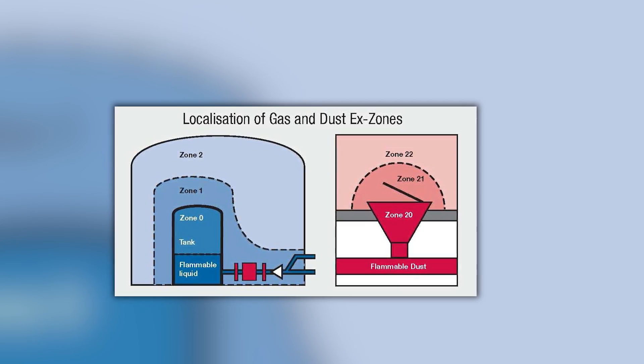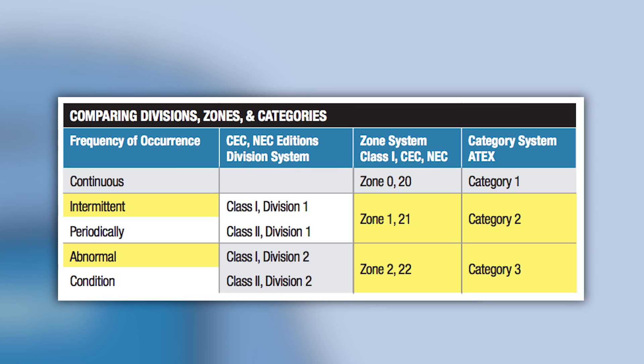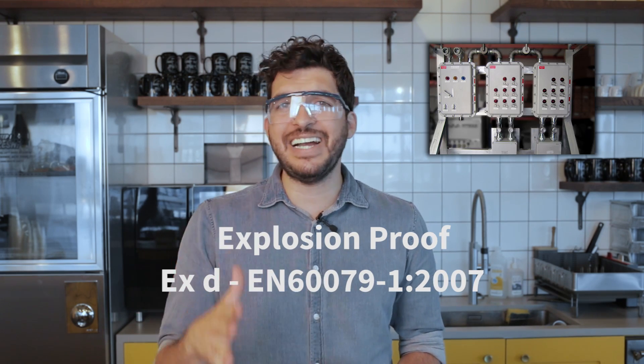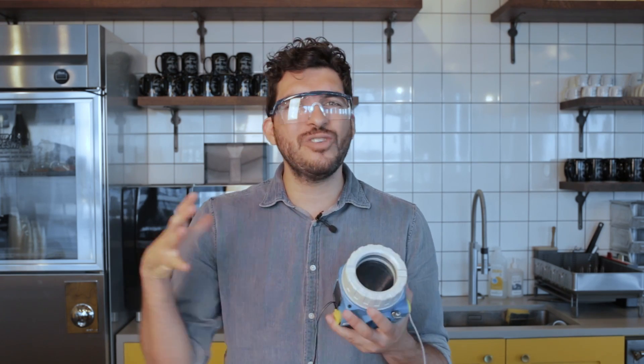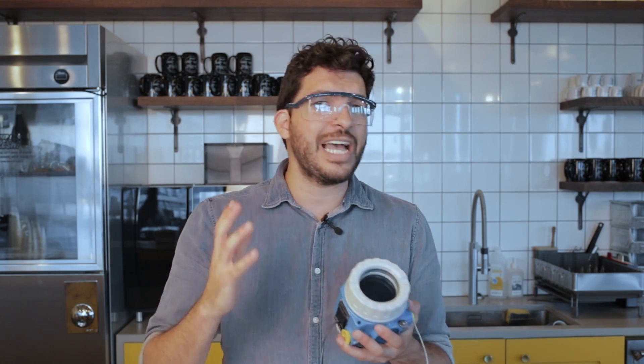Additionally, ATEX describes the zones in which explosive atmospheres are present and the probability of this happening. In the oil and gas and chemical industries, explosion-proof devices, or XD devices, are used. These devices, like this transmitter here, are able to contain the explosion inside their volume. For example, this transmitter has a thicker glass that will not allow the explosion gases to reach the surrounding atmosphere.